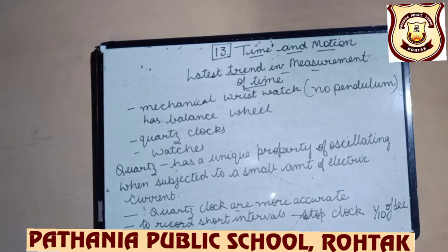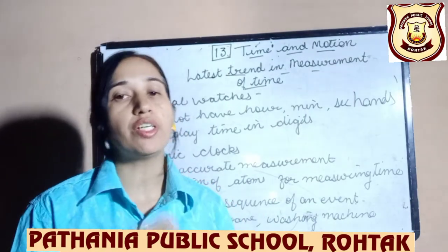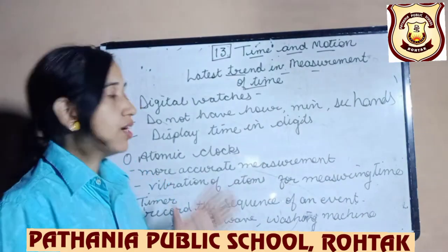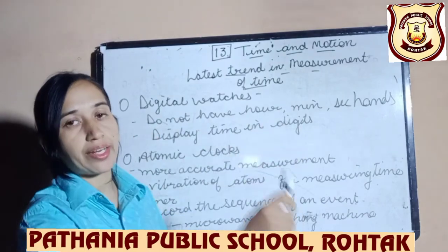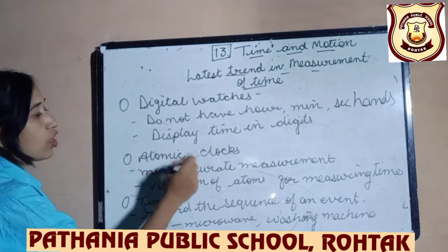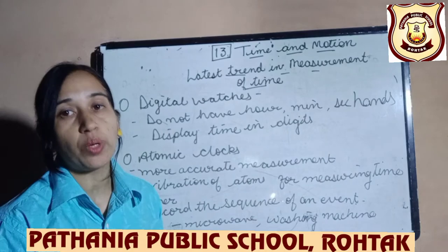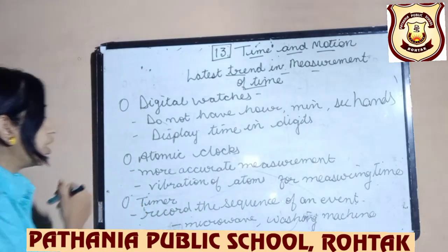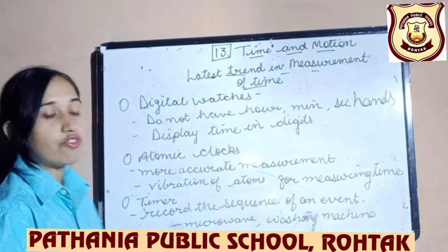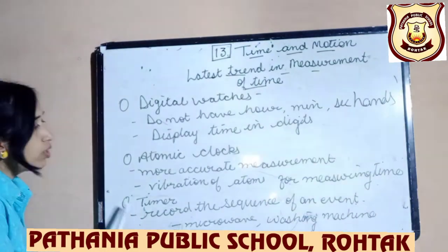Nowadays digital watches are also coming along. Digital watches do not have a minute or second hand; they display the time directly in digits. Next are atomic clocks — more accurate measurement can be achieved from atomic clocks. The vibration of atoms is the principle utilized in this kind of clock for measuring time.